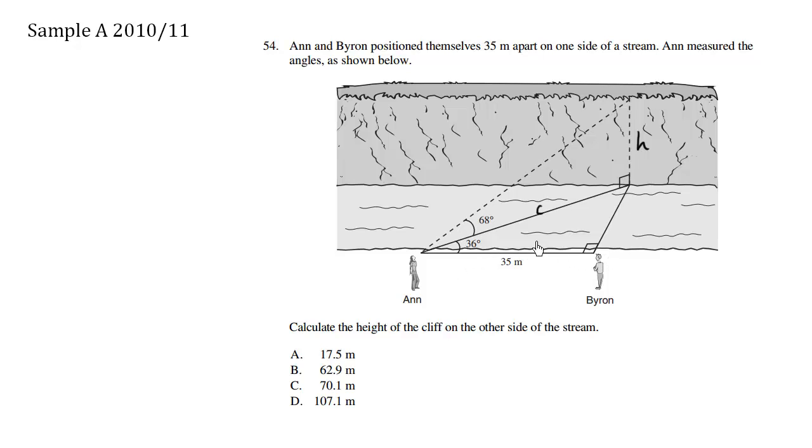We're interested in the hypotenuse and the adjacent. So when we write down SOH CAH TOA, we're interested in the adjacent and the hypotenuse. Adjacent, hypotenuse. We're going to use cosine.